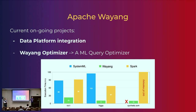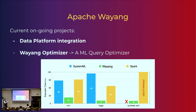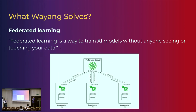The Wayang optimizer is a machine learning query optimizer that reduces query time when Wayang is doing all the work. Comparing with SystemML, SparkML, and Wayang, Wayang had the better performance between the other two. Wayang also solves another problem: federated learning. The idea is to train a model without anyone seeing or touching your data.